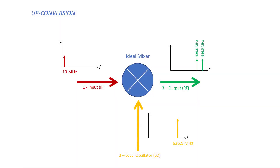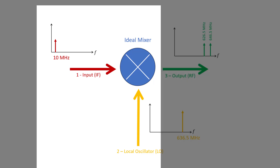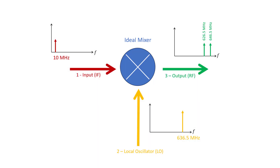This process is called upconversion and it can be done by means of non-linear devices called mixers. Mixers are a big topic, so in this video we won't go into the details of their operation. We will just look at them as black boxes with two input ports and one output port that perform a specific function.